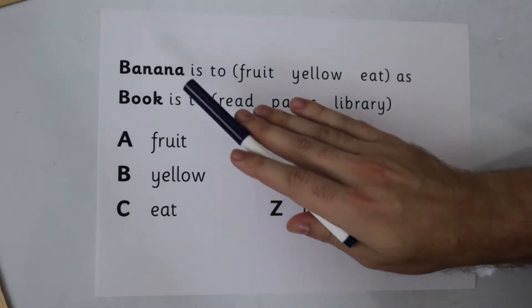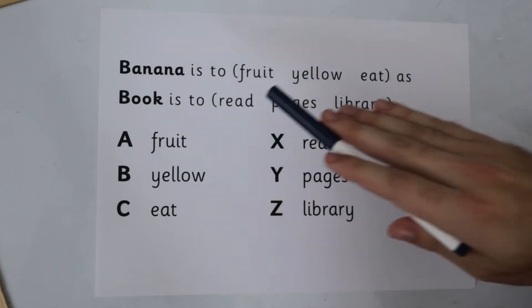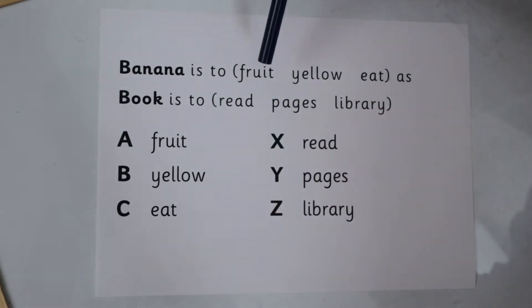So let's start right at the top with banana. Banana is to blank as book is to blank. We're going to start with fruit, banana is to fruit. Now what's the relationship between those two words? Well, banana is a type of fruit.